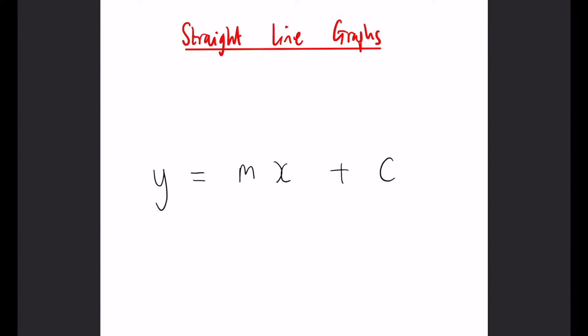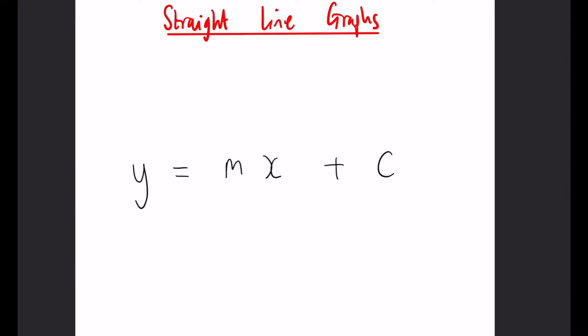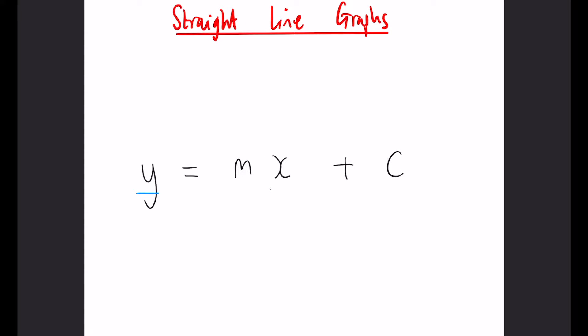y equals mx plus c has four main components: the y, the m, the x, and the c. You don't need to know necessarily what the y and the x mean. They don't really affect anything here. But the m and the c are both very important.